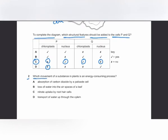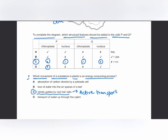MCQ number 2: which movement of a substance in plants is an energy-consuming process? Always remember that the uptake of mineral ions or nitrate ions by root hair cells is done by active transport, and active transport is an energy-consuming process. The answer is C. Absorption of carbon dioxide by palisade cells occurs by diffusion, which does not require energy from respiration.